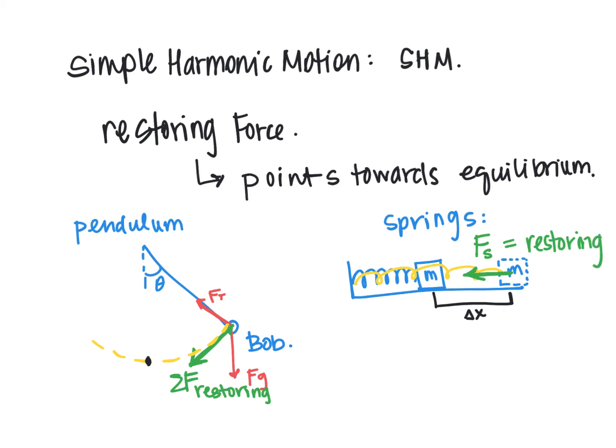Simple harmonic motion is special in the sense that it's both periodic and there's a restoring force. In some examples, you can have periodic motion where something occurs over and over, and that's periodic, but it's driven by an outside force or there's not a restoring force on it.